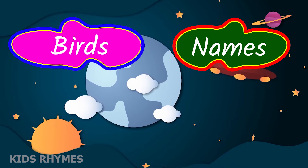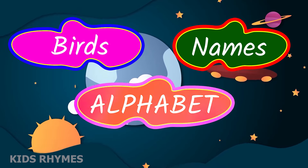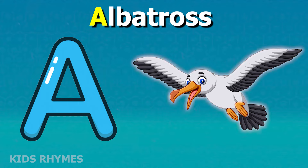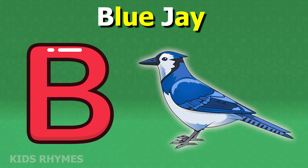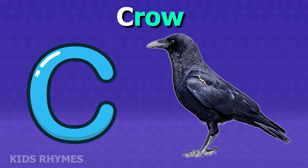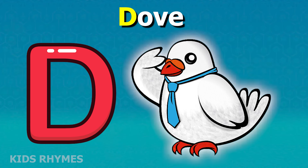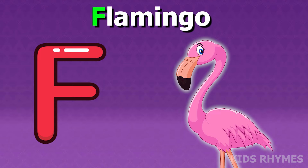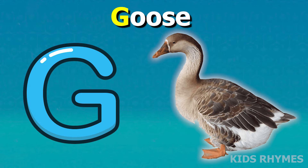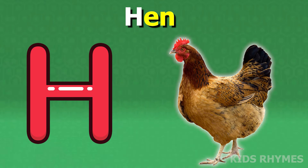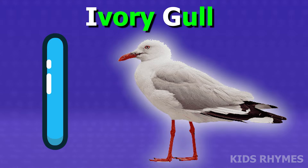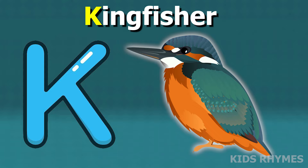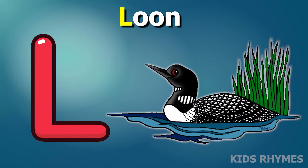Bird's name according to alphabet: A for albatross, B for blue jay, C for crow, D for dove, E for eagle, F for flamingo, G for goose, H for hen, I for ibis, J for jay, K for kingfisher, L for loon.